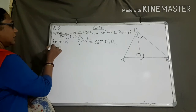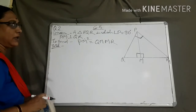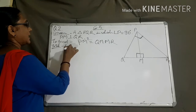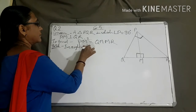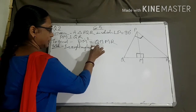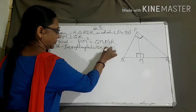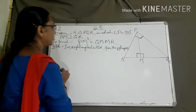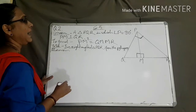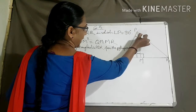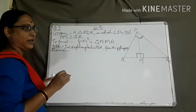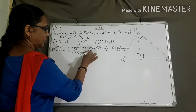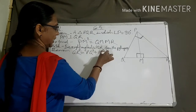Let's solve. We have three right-angle triangles here. In right-angle triangle PQR, from the Pythagoras theorem, this is the 90-degree angle, so QR is the hypotenuse. Therefore: QR square equal to PQ square plus PR square. — Equation number one.